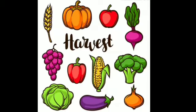Now let us learn what are the different fruits and vegetables that are found in the autumn season. They are pumpkin, apple, turnip, broccoli, maize, capsicum, grapes, cabbage, brinjal, and pomegranate.